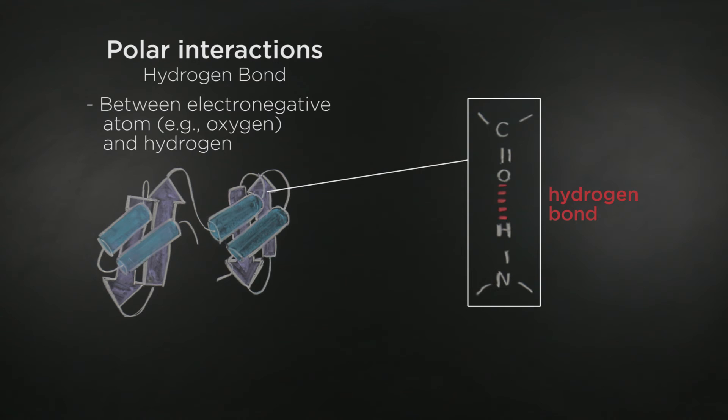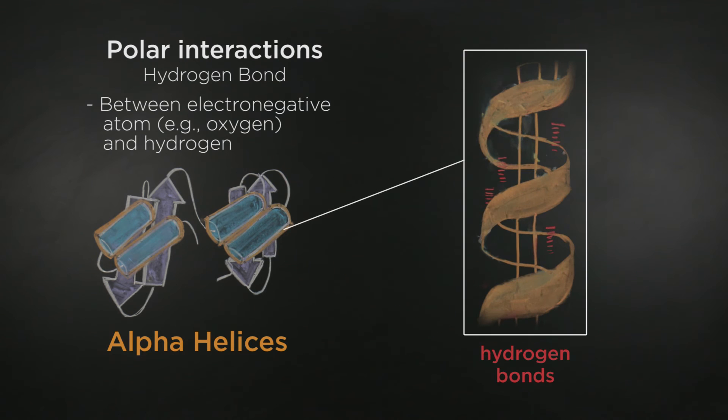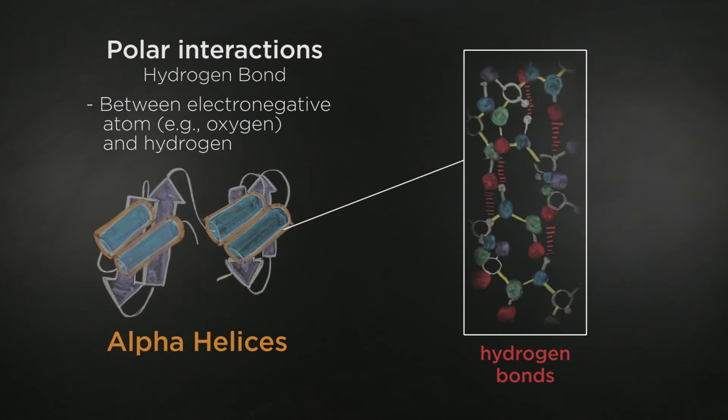To see the importance of hydrogen bonds, let's look at how they function in an alpha helix. As you can see in this configuration, repetitive hydrogen bonds are formed between the backbone amides of an N and N plus 4 amino acyl residue.